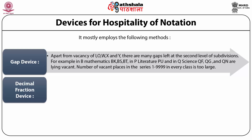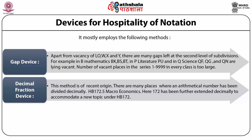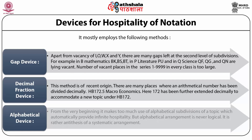Then is the decimal fraction device. This method is of recent origin. There are many places where a mathematical number has been divided decimally. For example, HB172.5 Macroeconomics — here 172 has been further extended decimally to accommodate a new topic under HB172. And lastly, but mostly used, is the alphabetical device. From the very beginning, it makes too much use of alphabetical subdivisions of a topic, which automatically provides infinite hospitality. But alphabetical arrangement is never logical. It is rather the antithesis of a systematic arrangement.